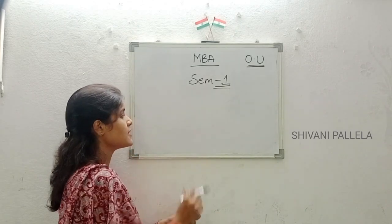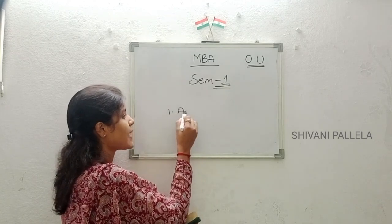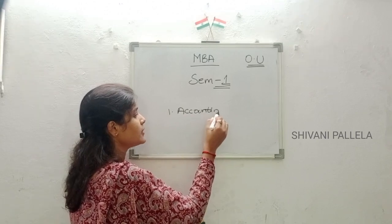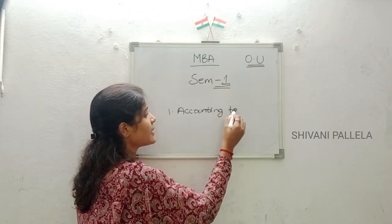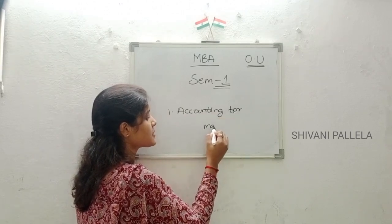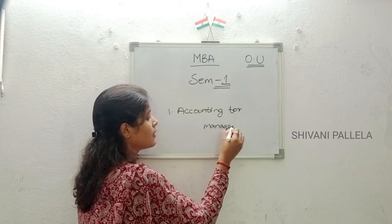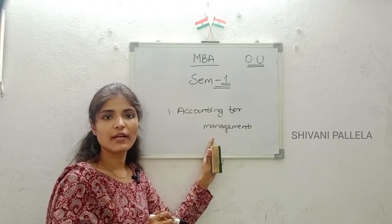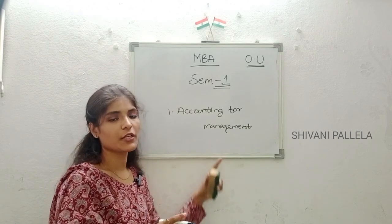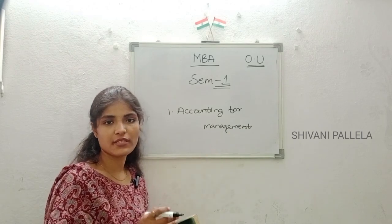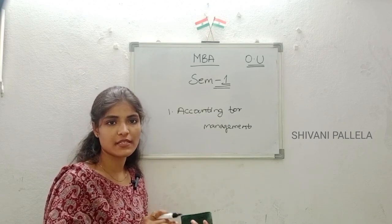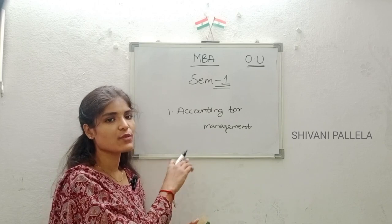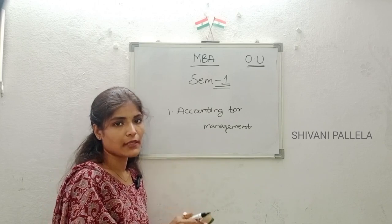The first subject is Accounting for Management. This is the first subject in MBA semester one. Here you will learn all the journal entries, final accounts, trial balance, depreciation — everything related to accounts, both theory as well as the problematic part.